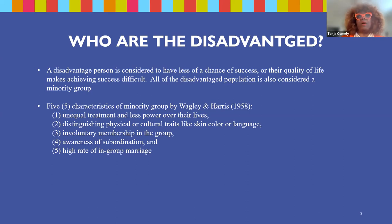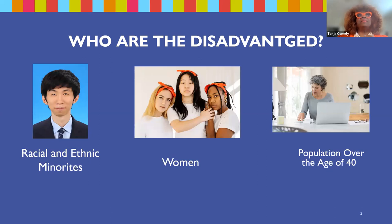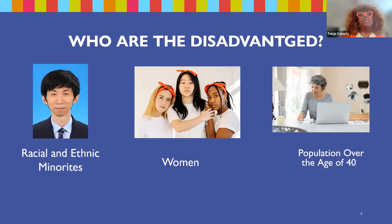Another characteristic not listed by Wagley and Harris that I found during my research is that being part of a minority group does not have anything to do with size — our Latino and Hispanic population is the largest growing population — but it has to do with who has the power. With that being said, we are going to address who are the disadvantaged: racial and ethnic minorities, women, and the population over the age of 40. During our presentation today, there will be questions I will ask you to address in the chat.